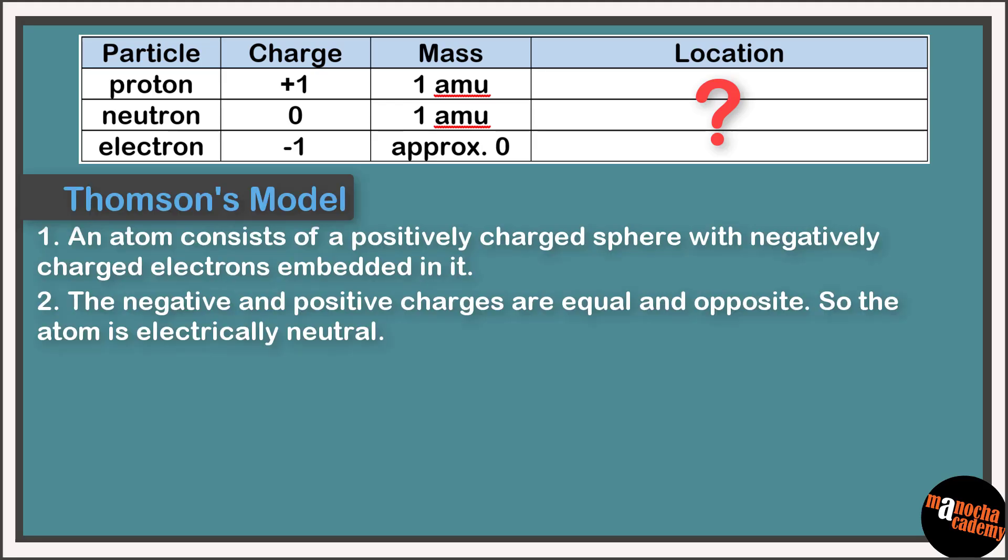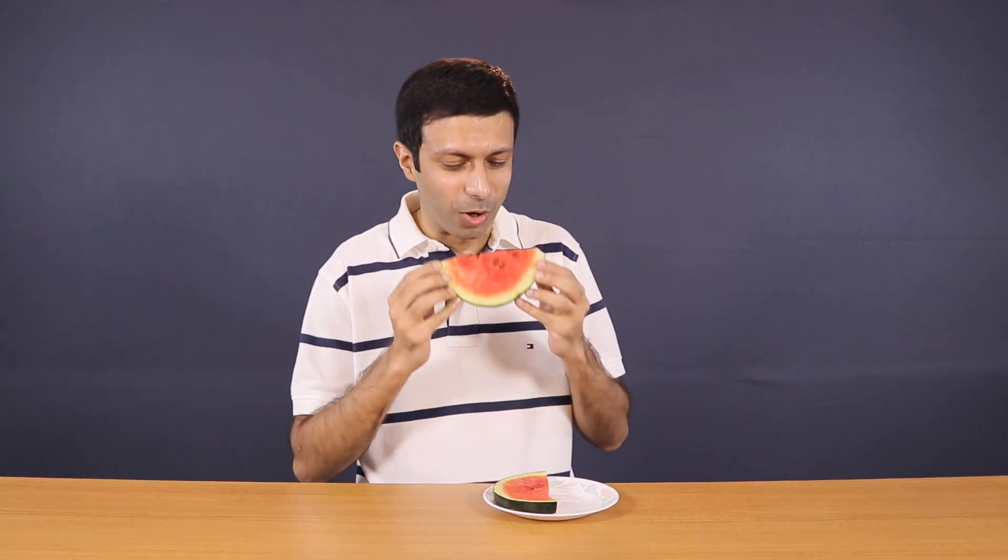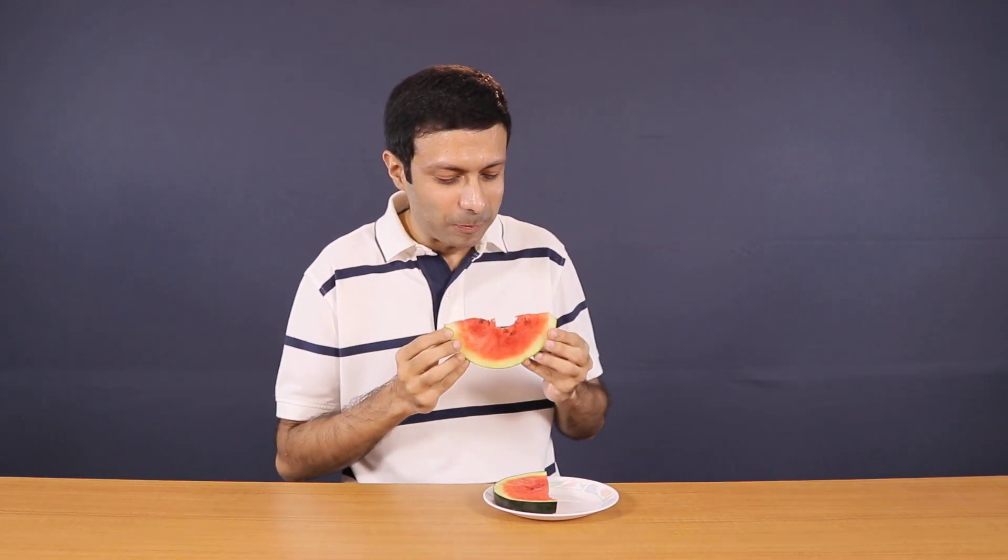Let's add Thomson's model to our concept board. Thomson's model explained the electrically neutral nature of the atom, but it could not explain the result of experiments carried out by many scientists. A scientist by the name of Ernest Rutherford came up with an interesting experiment that completely disproved Thomson's model. With his experiment, he ate up Thomson's plum pudding model or the watermelon model.